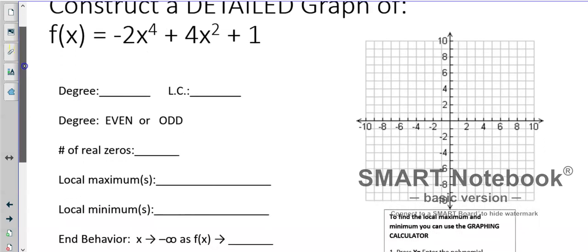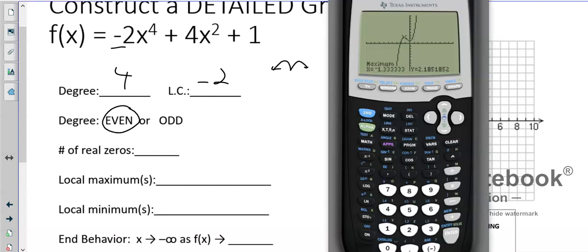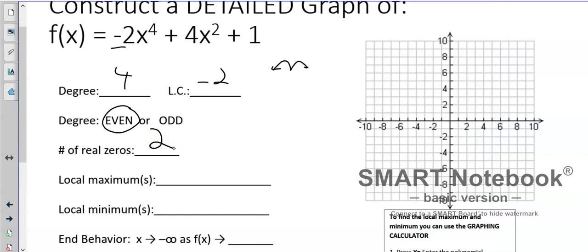Alright. Let's do this again. So, the degree is 4. The lead coefficient is negative 2. 4 is an even number. Now, since it is a negative, that means we're going to be looking at an M shape. Alright. So, let's go back to our calculator. Go to Y equals. Clear it out. Remember, use this gray negative key down here. -2X to the power of 4. Come down. Plus 4X squared. Plus 1. Let's hit graph. Now, notice, even though it's an M, it only hits the X axis once and twice. There's only two real zeros.